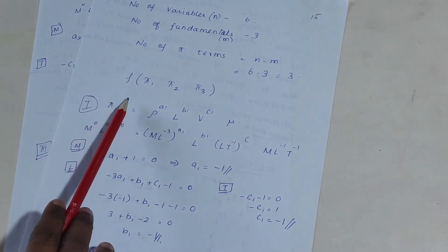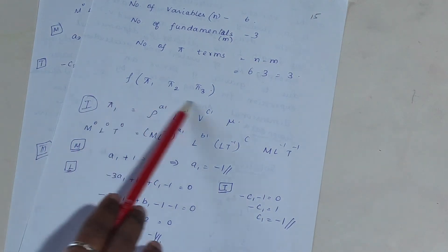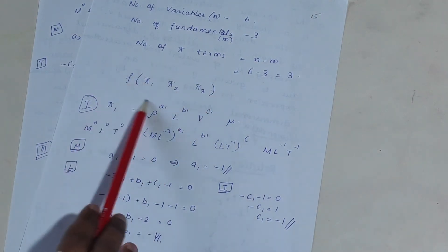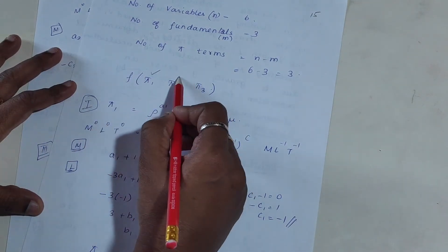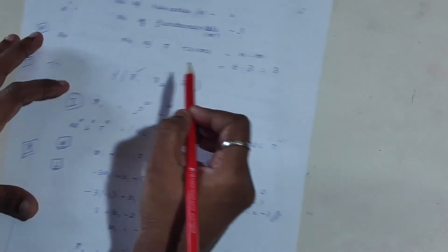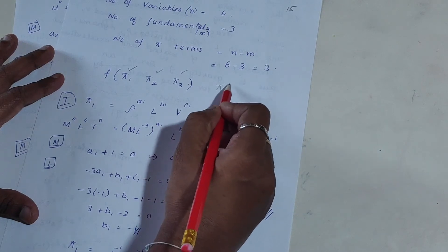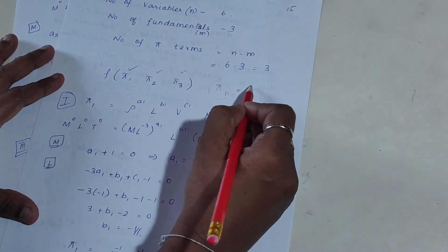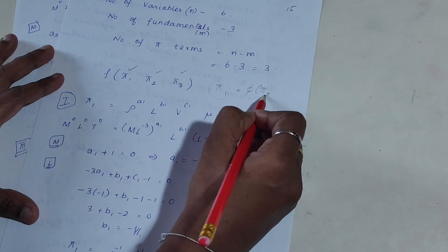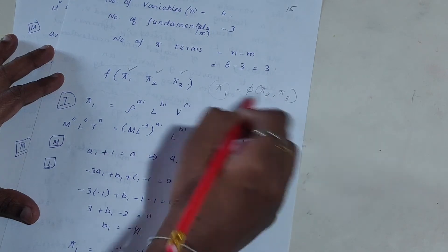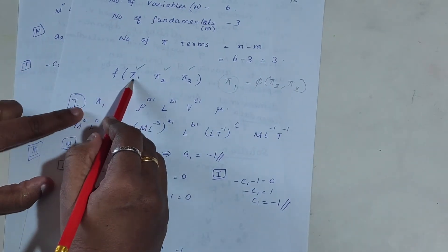Therefore, F is a function of π₁, π₂, π₃. You have to find the values for π₁, π₂, and π₃, and the last step is to represent one Pi value with respect to the other Pi values — that will be your final answer.